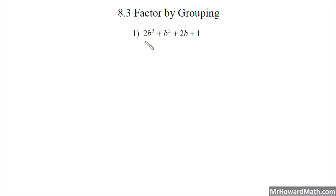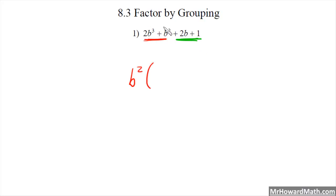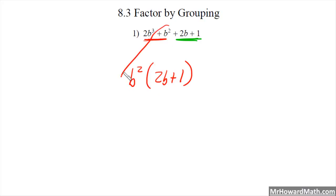As the name implies, we'll be grouping. We're going to group the first two together and the next two together. For the first group, we're looking for the greatest common factor, which is ab². We can't take out a number because our coefficients are 2 and 1, and 1 is the only common factor. So we're left with 2b plus 1. Because 2b³ divided by b² is 2b, and b² divided by b² leaves us with plus 1. Checking: b² times 2b is 2b³, and b² times 1 is b². Check.